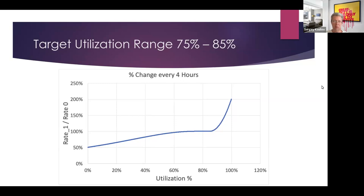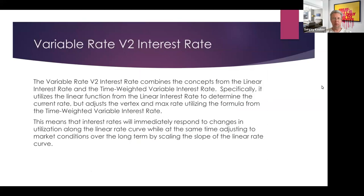As long as utilization stays within the target range, the rate stays fixed. Once it moves outside, the rate adjusts toward the minimum or maximum. An actual innovation is the so-called Variable V2 Interest Rate — a combination of the linear interest rate concept and the time-weighted variable interest rate.